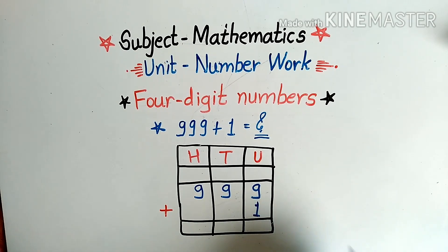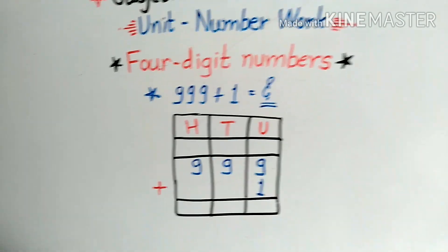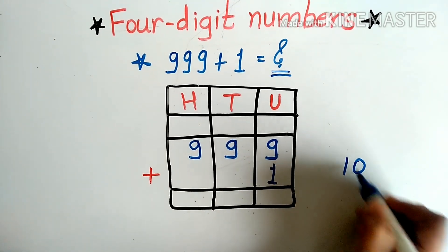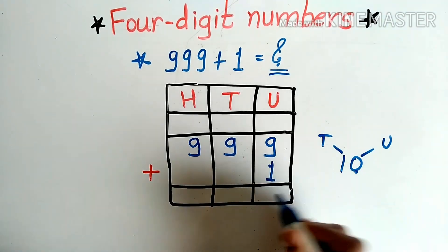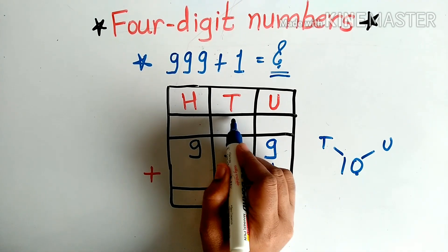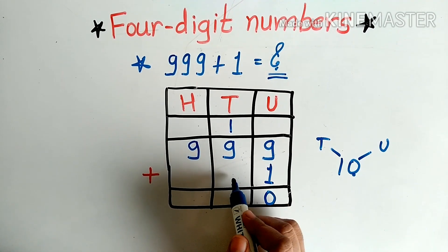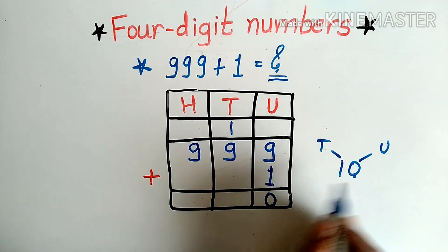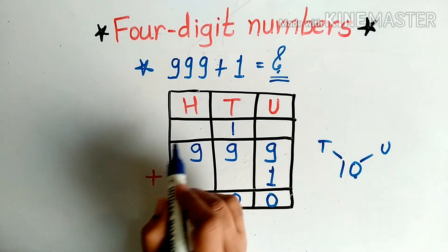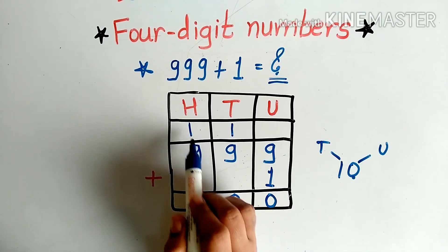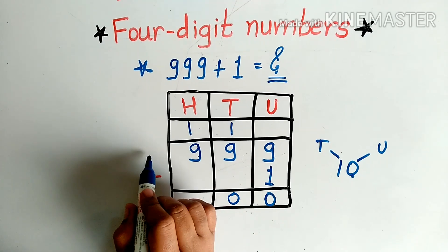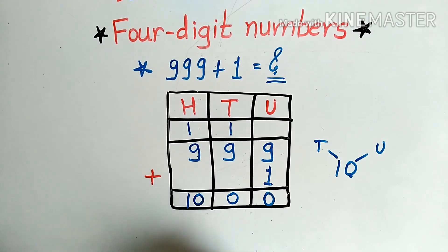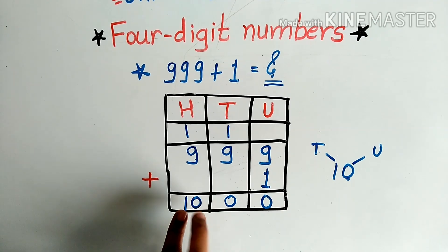Now we will solve this addition. Nine plus one equals ten. In ten, 0 is the units and 1 is the tens, so we write 0 here and carry 1 to the tens box. There is no other number, so we add the carried 1 into 9: nine plus one equals ten. Again we write 0 here and carry 1. Then nine plus one equals ten, but there is no number to carry to, so we must write the full result — but we can't write two numbers in one box.